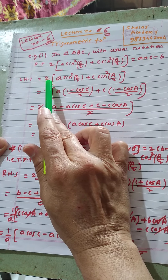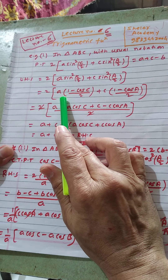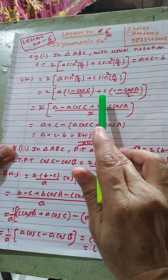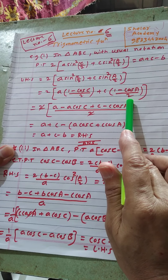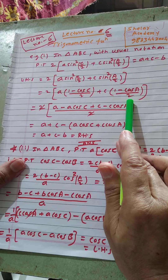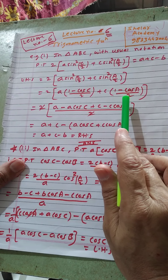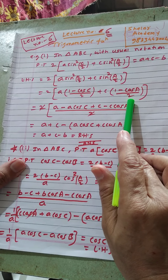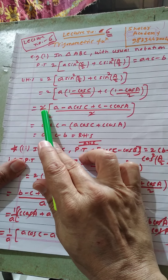Starting from LHS: 2[a sin²(C/2) + c sin²(A/2)]. We apply the half-angle formula: sin²(θ/2) = (1 − cosθ)/2. You should remember this formula both from LHS to RHS and RHS to LHS — learn it by heart.